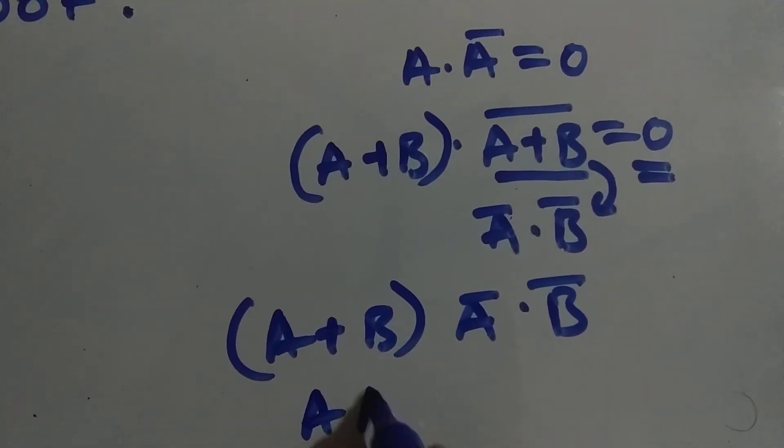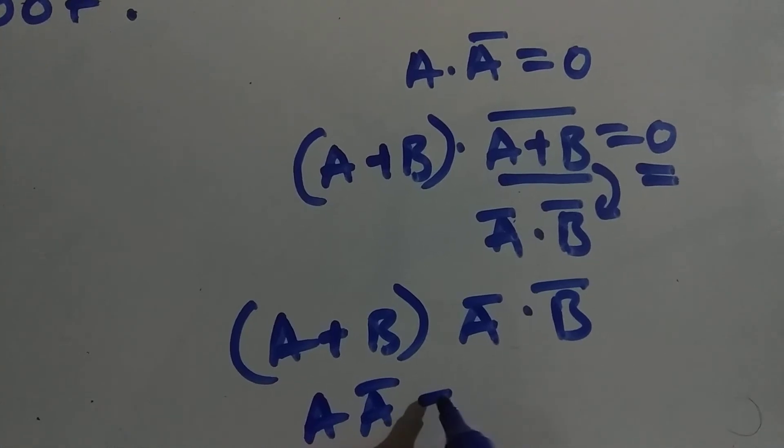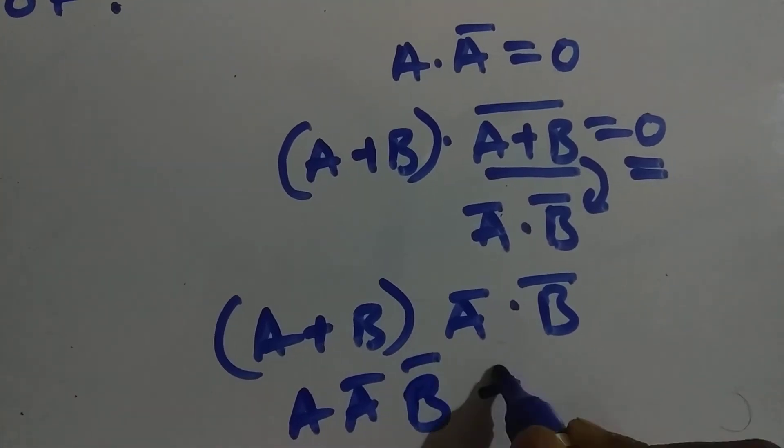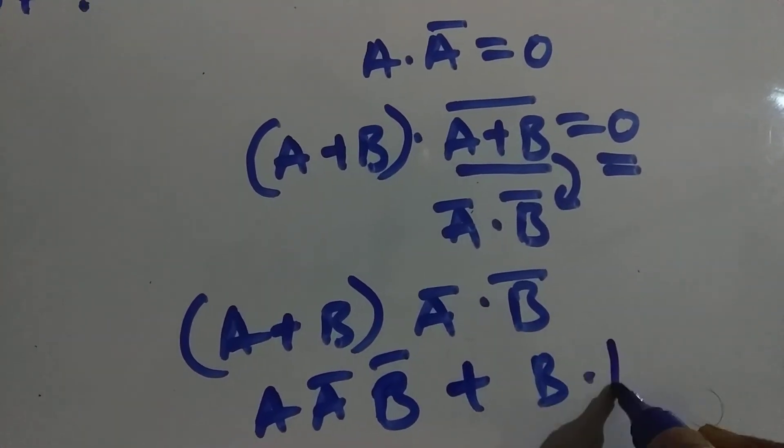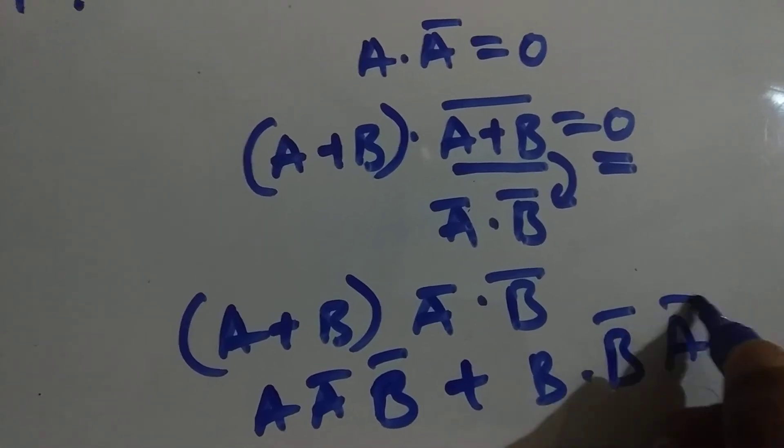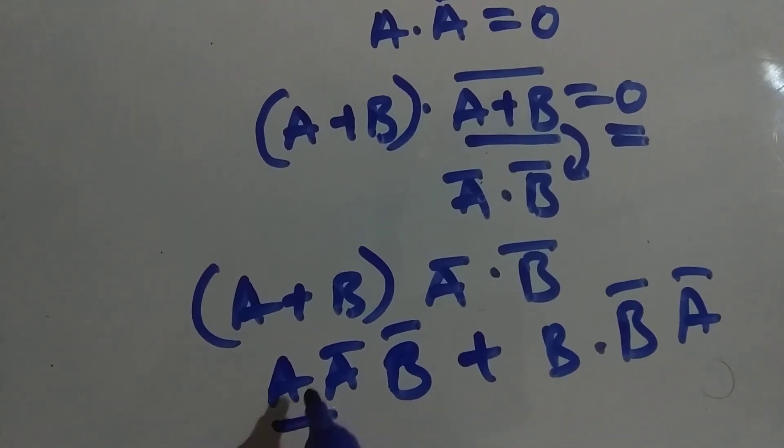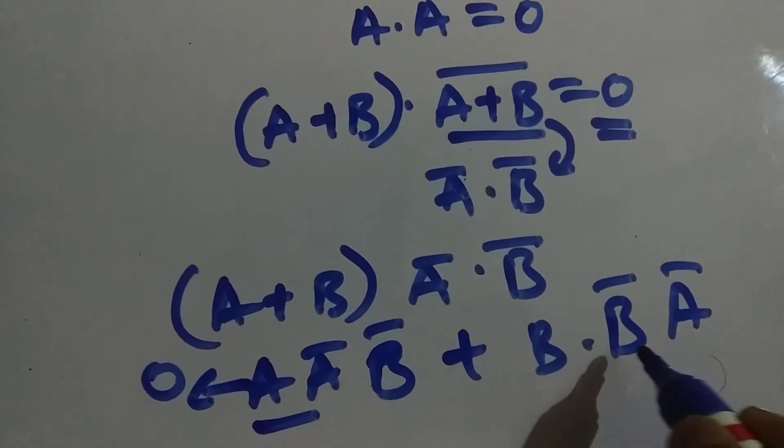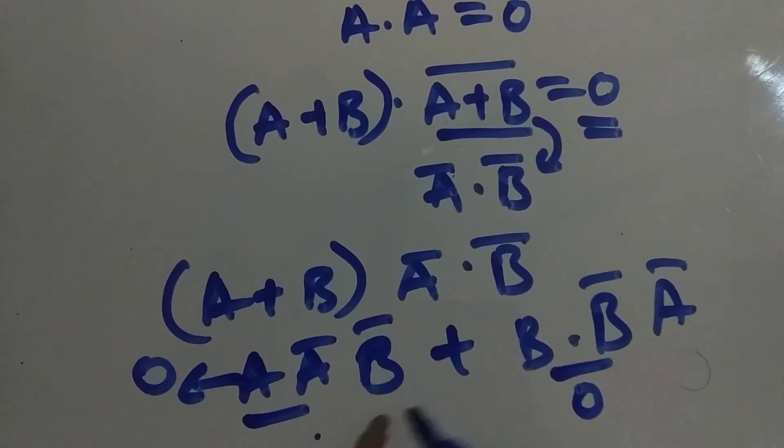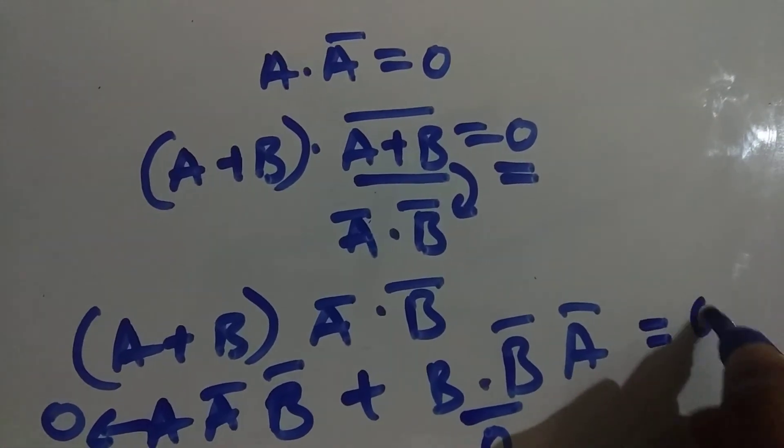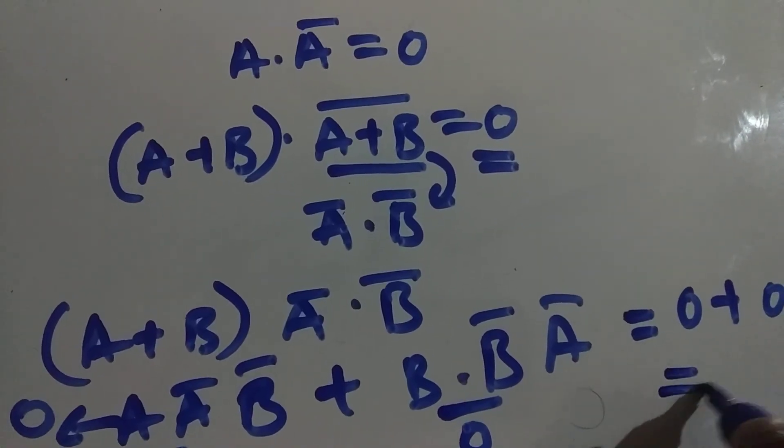A into A bar plus A bar B bar plus B into B bar into A bar. As you know that A into A bar equals 0, and B into B bar equals 0. So 0 into anything we will get 0 plus 0, which equals 0.